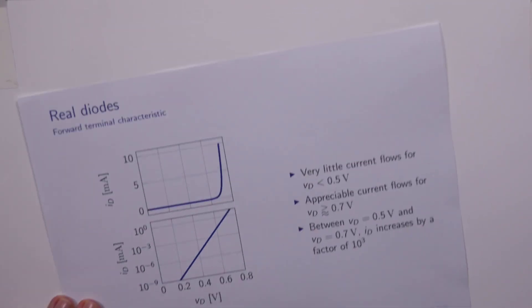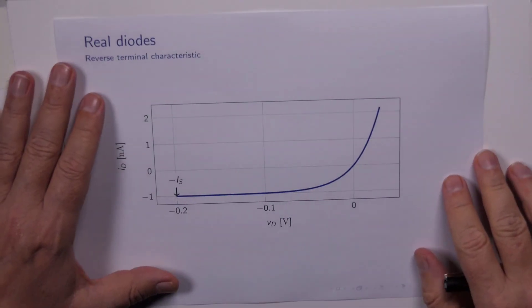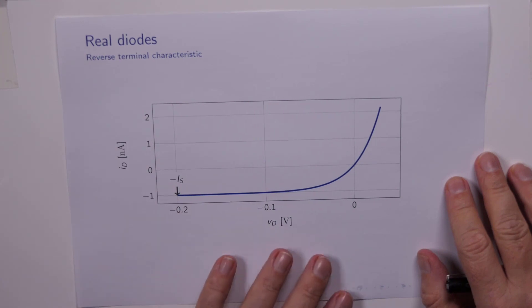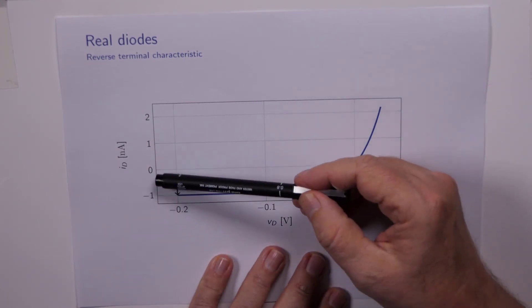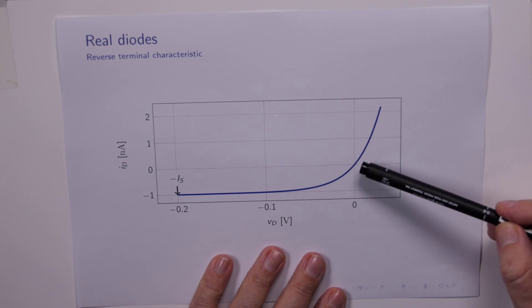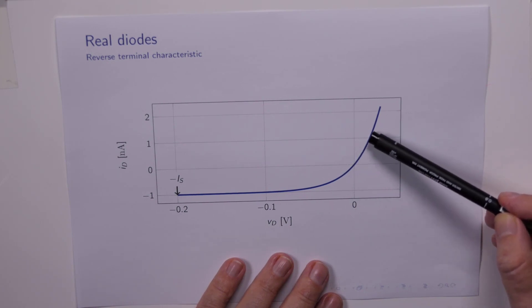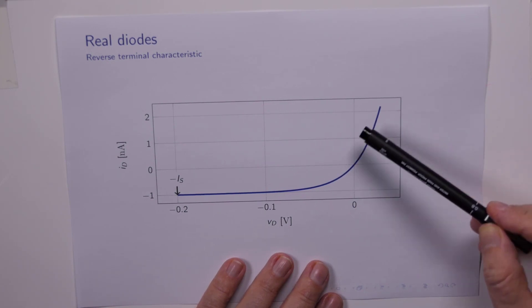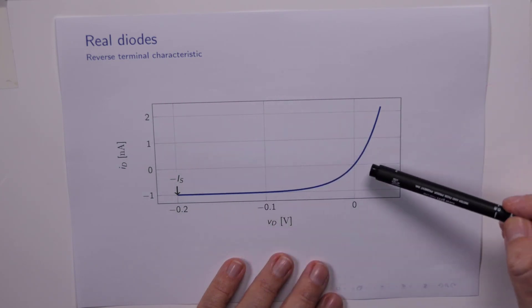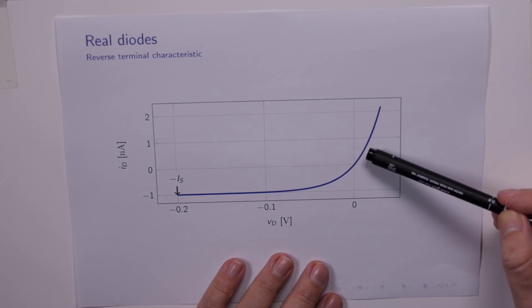Let's have a look at the reverse characteristic. So we now let VB go a little bit negative and we'll see what happens. On this graph we're still plotting the current versus the voltage, but now the origin 0,0 is here. We can see that for positive VD the current is starting to increase. Now the scale is in nanoamps. When we increase just a little bit, maybe 20 millivolts or so, we've gone up to 1 nanoamp.